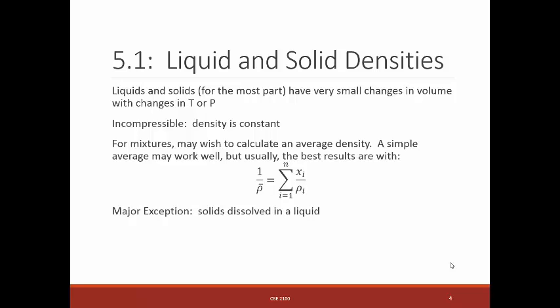So you're going to take the, well if you have your density is in mass per unit volume, you want mass fractions divided by the density. Add those up for all your different terms. And then the reciprocal of that will be the average density.